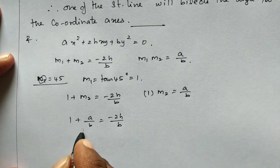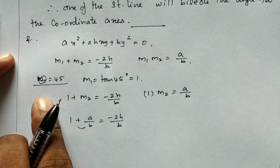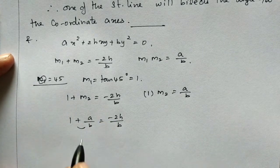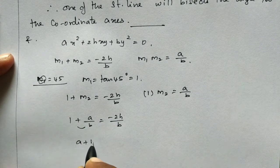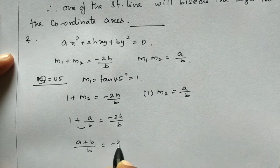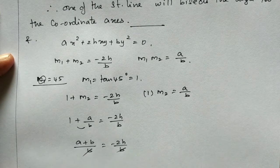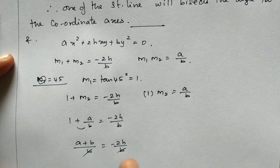Now, if you cross multiply, for the 45° case: A/B + B/B = -2H/B, so A + B = -2H. The result is (A + B)² = 4H².